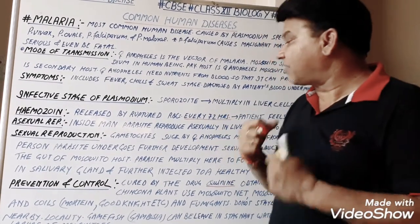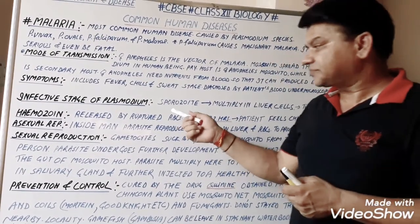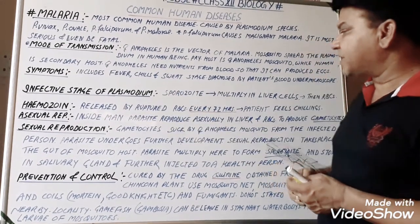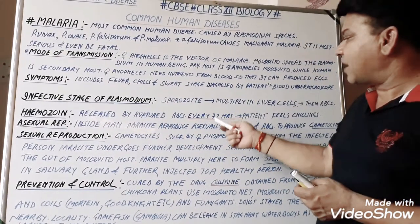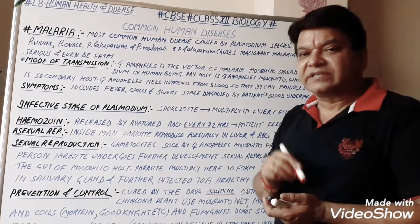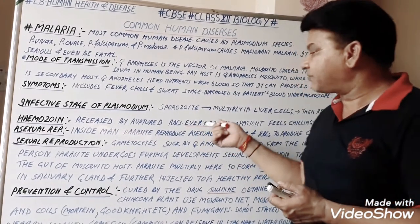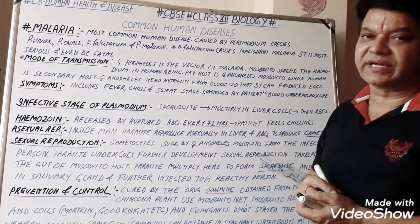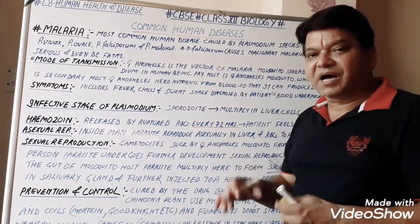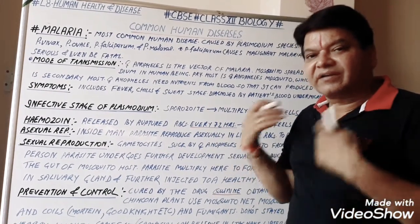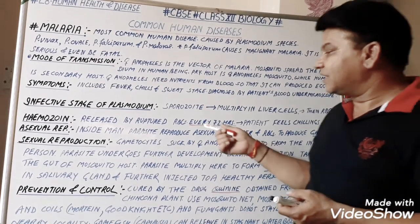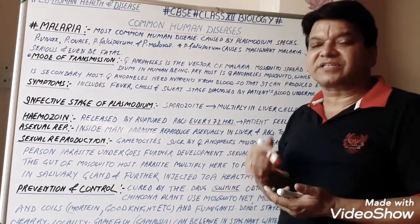This haemozoin release is repeated every 72 hours, that is every 3 days. This is why the patient with malaria feels very strong chills. The chilling sensation is felt very intensely by the patient.